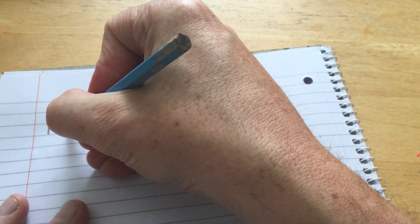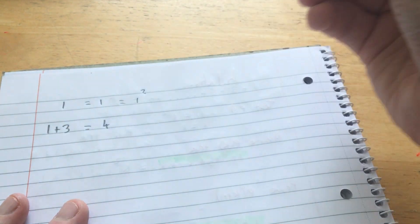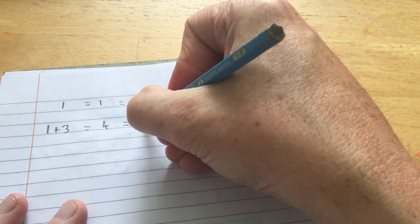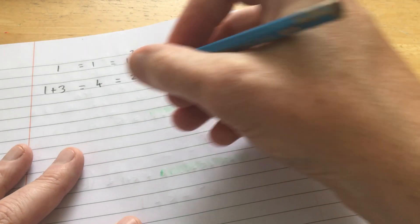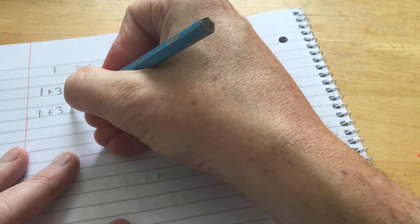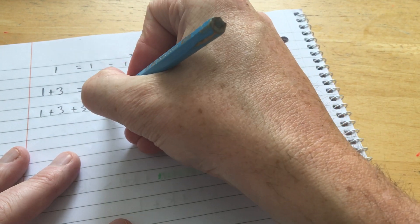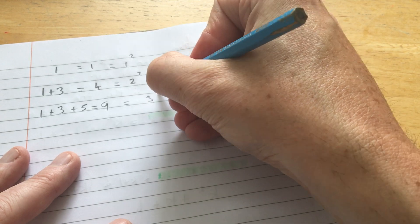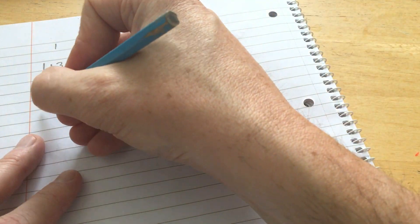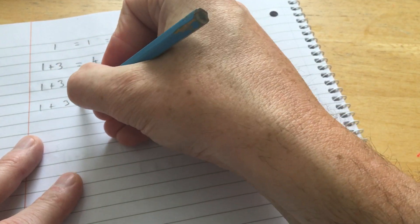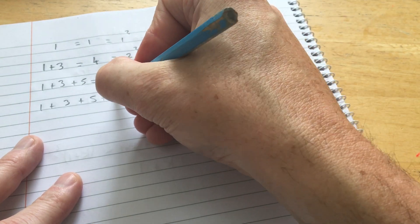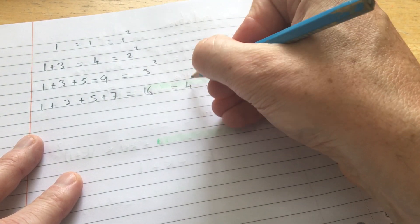Now let's look at the first two odd numbers. 1 plus 3, that's equal to 4, which is actually the same as 2 squared. The first three odd numbers, 1 plus 3 plus 5 is 9, and 9 is the same as 3 squared. The first four odd numbers, 1 plus 3 plus 5 plus 7, that's equal to 16, which is 4 squared.